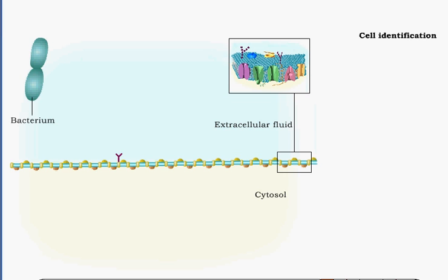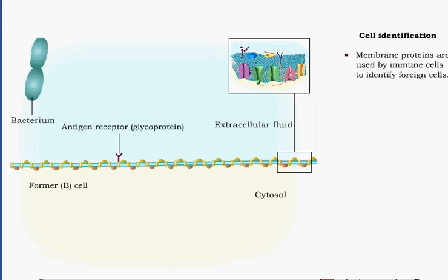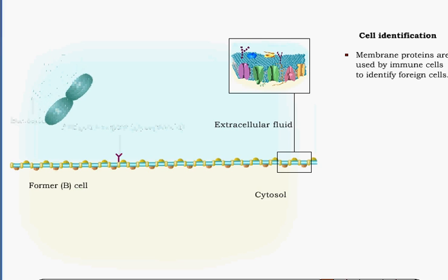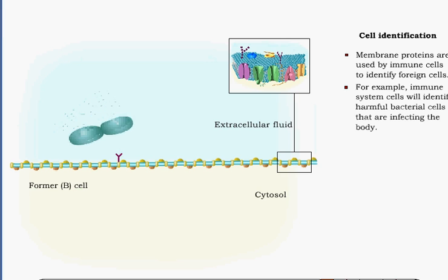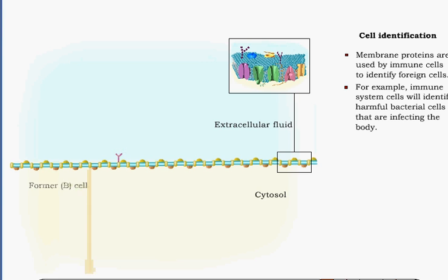Certain membrane proteins are specific to cell types. They allow a cell to recognize other cells and to respond to potentially foreign cells. For example, immune system cells will identify harmful bacterial cells that are infecting the body.